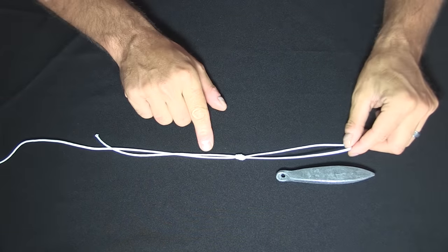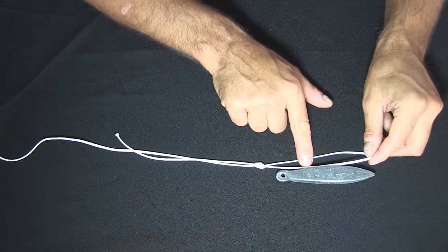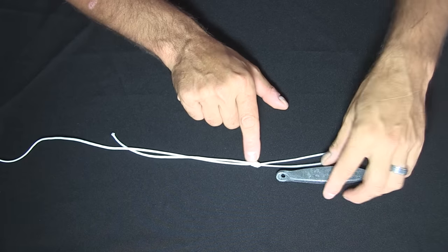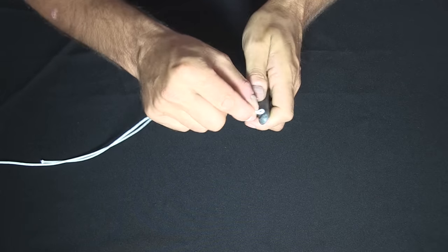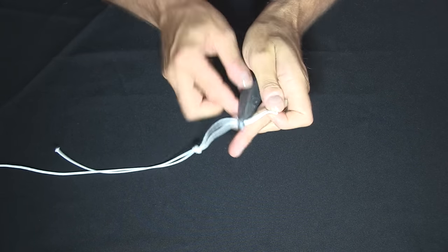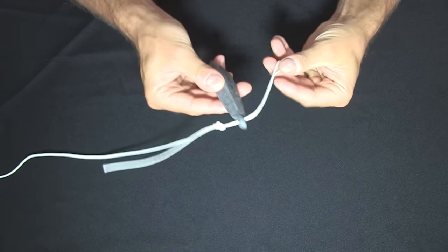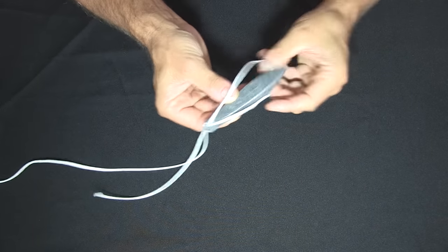It's important if you're using thick line that you make your loop longer than the sinker. This is because the knot will not fit through the eye of the sinker if it's not long enough. So by doing so we don't need for the knot to pass through the sinker eye so we can loop it over like so.